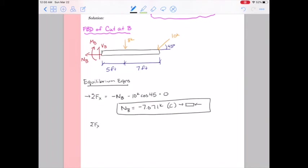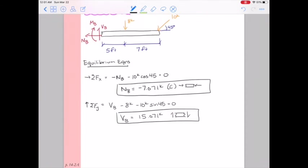Next we move on to sum forces in the y direction. So sum force in the y direction, we have a positive VB minus 8 kips minus 10 kips sine 45 degrees - that's the vertical component of the force - equals zero. So solving for the shear at B, we now have a positive 15.071 kips. And again we'll sketch in our positive direction, and the great thing about that little element shape is that no matter what sign convention you use, that will always speak to the true direction.